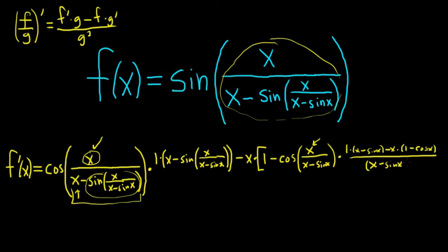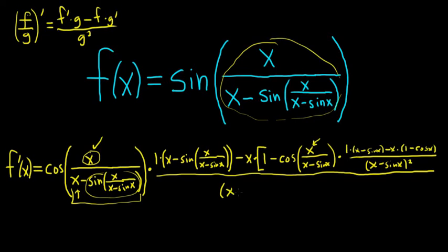That's all over the bottom squared. And we're not done — let's finish that first quotient rule. It's all divided by this bottom piece here squared, so it'll be parentheses x minus the sine of x over x minus the sine of x, and all of this is being squared.